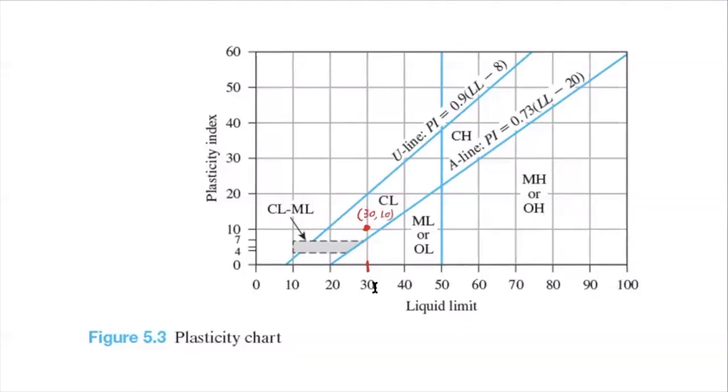And PI is 10. So that's our soil. That's where it plots on this plasticity chart. And this is clearly above A line. So this soil is above A line.